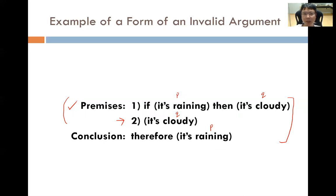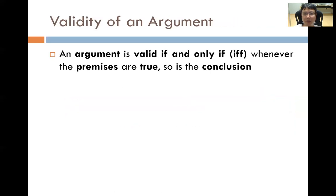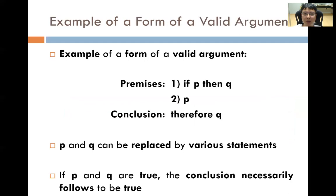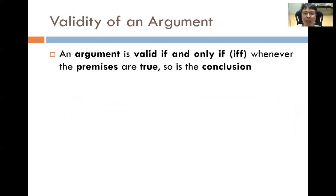I hope you understand what is meant by a valid and an invalid argument. If it is a valid argument, if we accept that the premises are true, we do not have to discuss whether the conclusion is true — it must necessarily be true. For an invalid argument, even if we can settle on whether the premises are true, we still cannot arrive at the conclusion because the argument is in the form of an invalid argument.